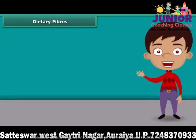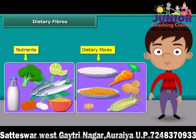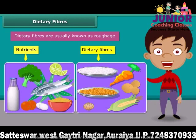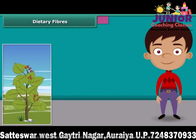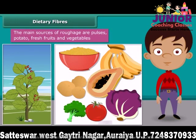Dear friends, do you know that besides nutrients, dietary fiber also plays an important role in our body? They are usually known as roughage. You need to know that roughage does not provide any nutrition to our body but adds bulk. They are found only in plants — pulses, potato, fresh fruits, and vegetables are the main sources of roughage. This helps our body to get rid of the undigested food.